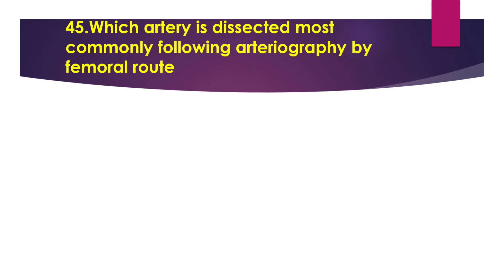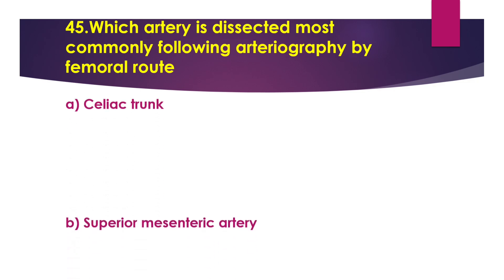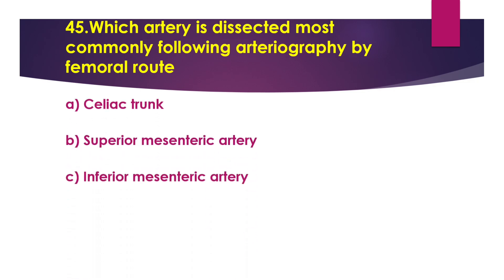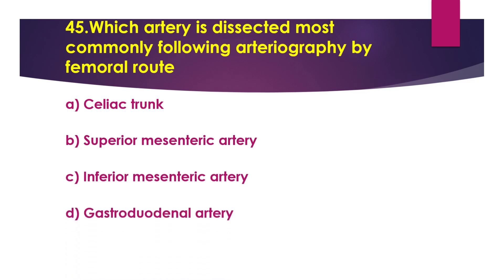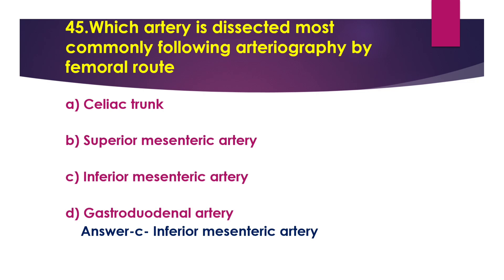Question 45: Which artery is dissected most commonly following arteriography by femoral route? Option A: celiac trunk. Option B: superior mesenteric artery. Option C: inferior mesenteric artery. Option D: gastroduodenal artery. The answer is option C, inferior mesenteric artery. Inferior mesenteric artery arises from the abdominal aorta at the level of the third lumbar vertebra. It supplies the hindgut and has 4 major branches: left colonic, sigmoid, and superior rectal arteries.